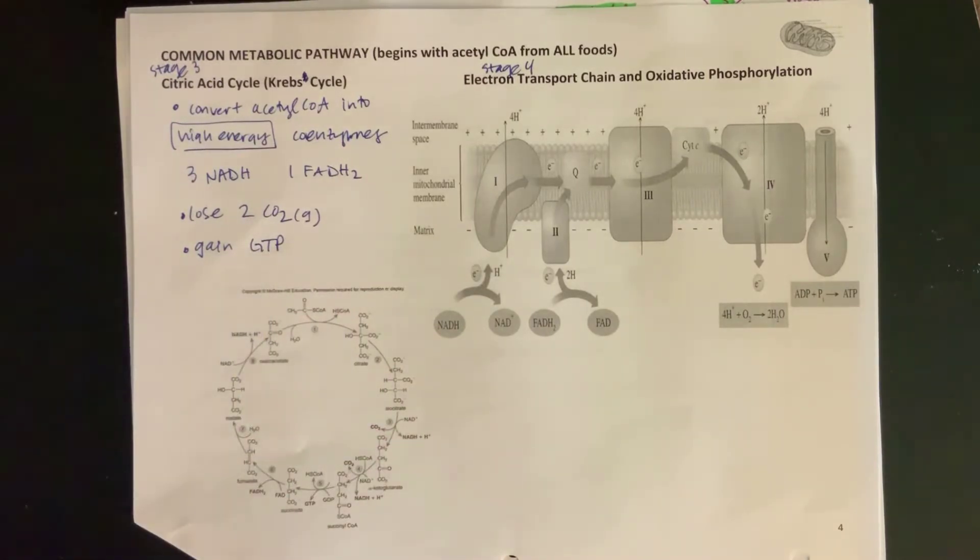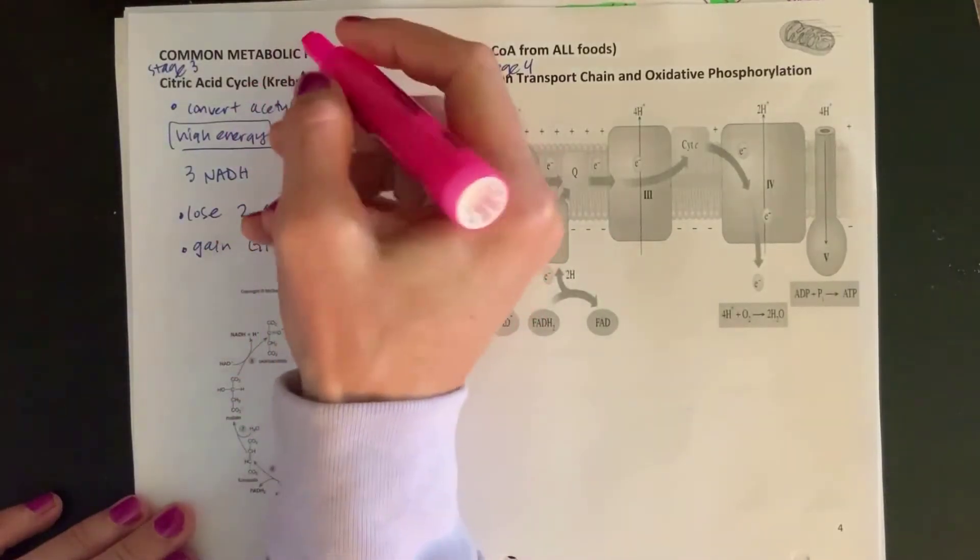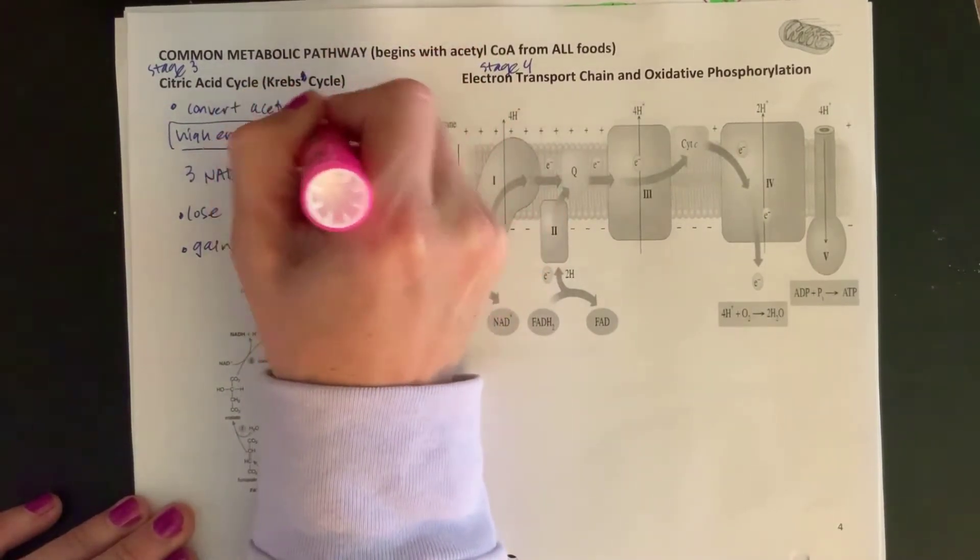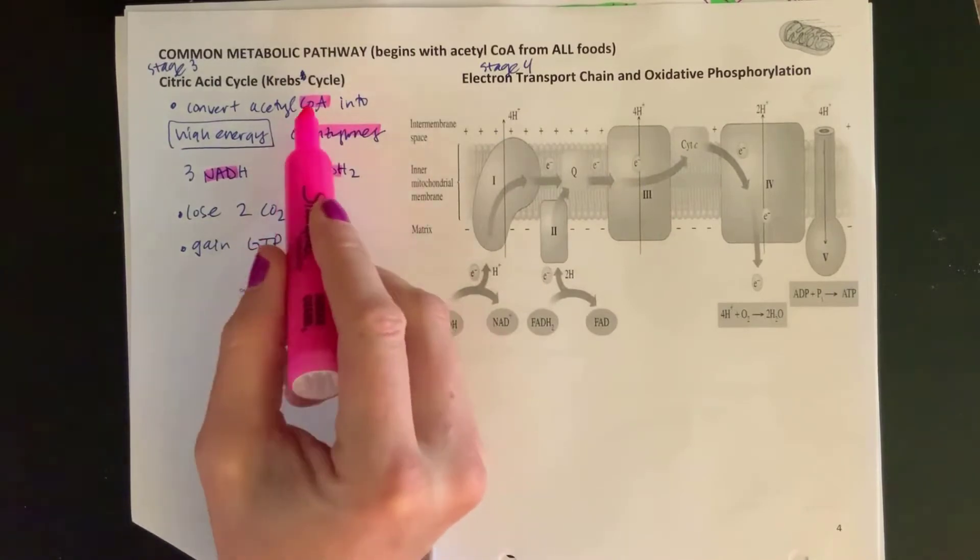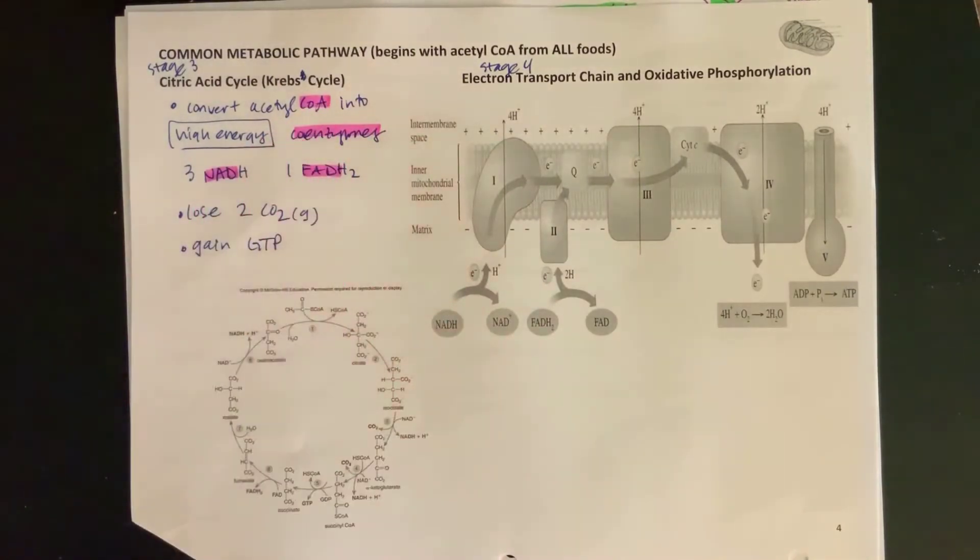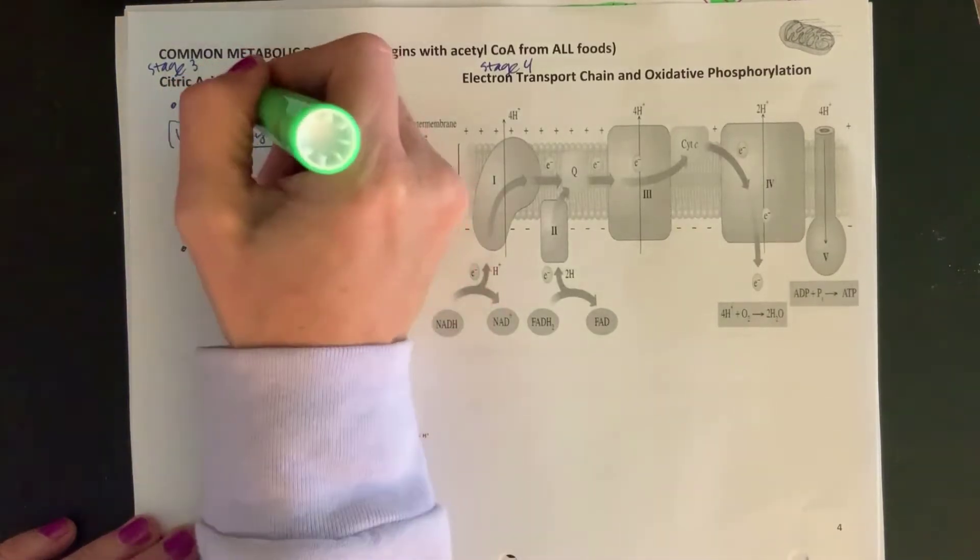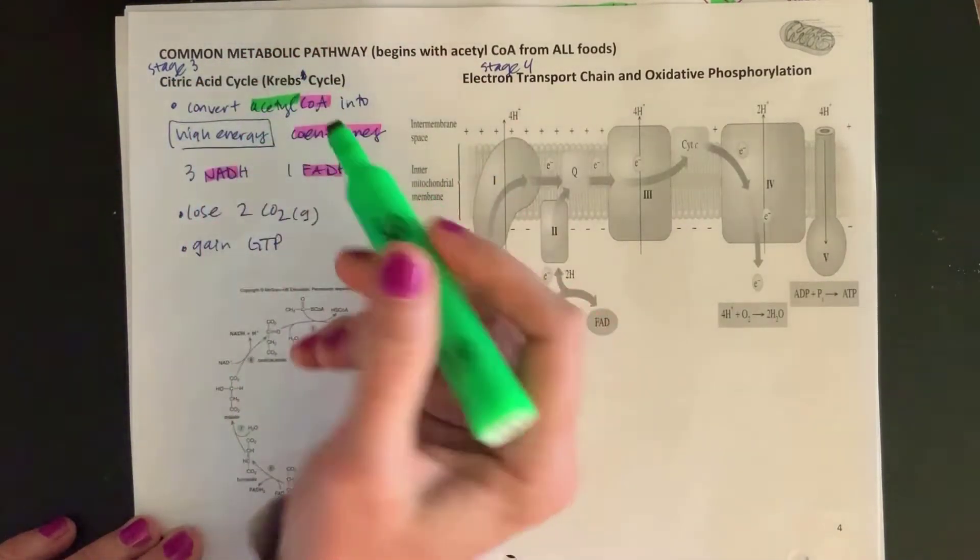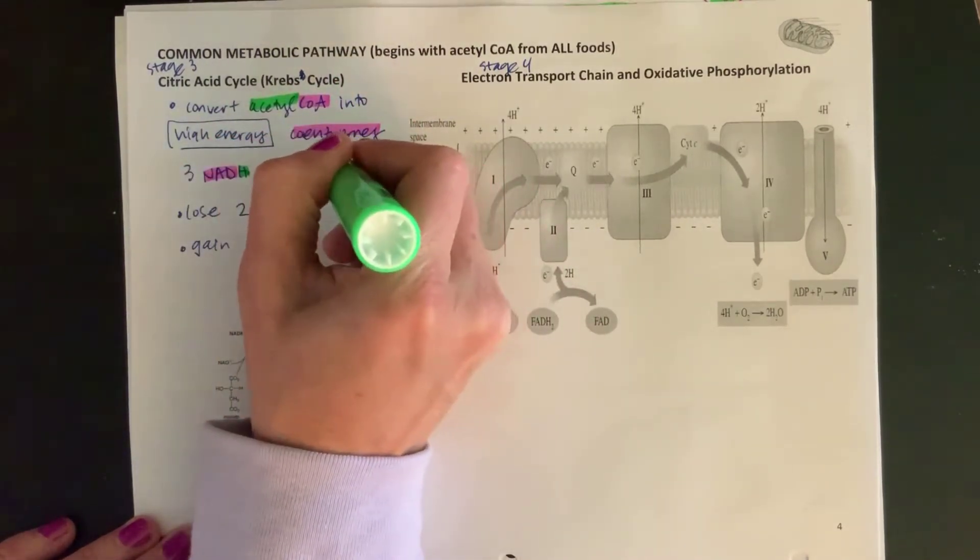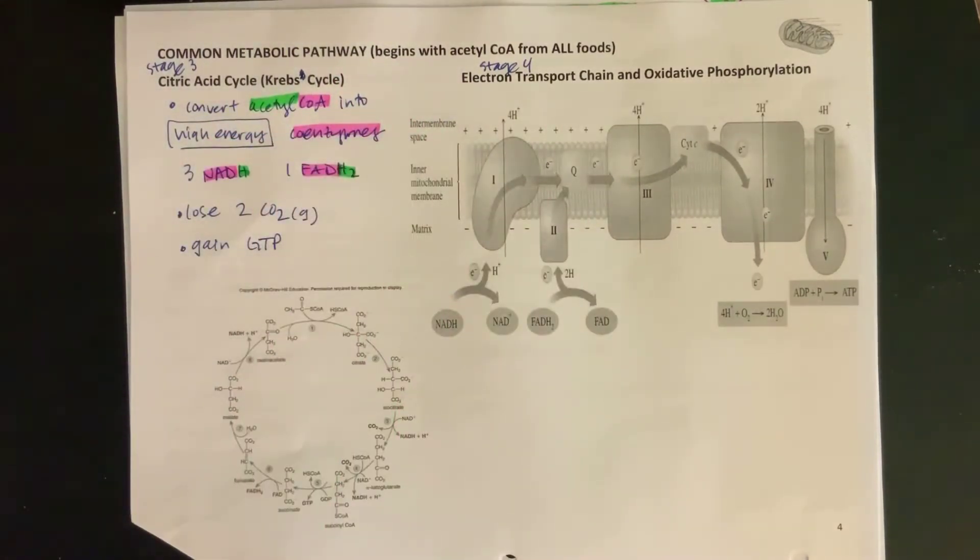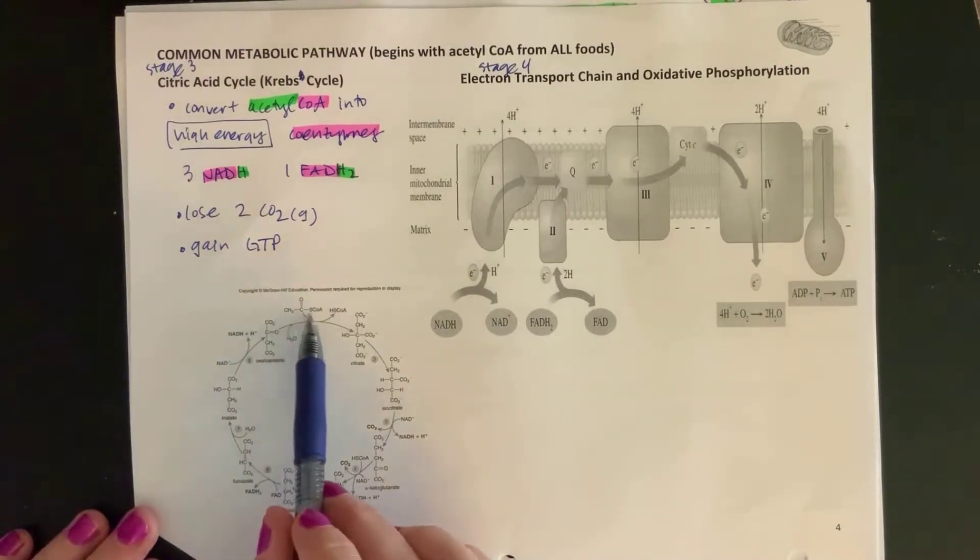Just to remind you, we've been using our pink for coenzymes, so we are having acetyl CoA help us produce these NAD and FAD coenzymes. We've been using green for the substrate. This is our fuel—initially the food we ate has now turned into acetyl groups, and we're going to further reduce that down to just hydrogens and electrons as we go forward.